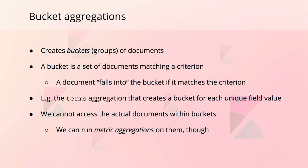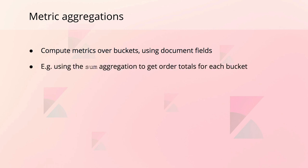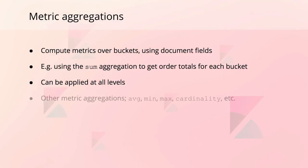That's where metric aggregations come into the picture. Metric aggregations compute metrics over a set of documents, being the documents within a bucket. The metrics are based on values extracted from the documents. Let's take the sum aggregation as an example. By applying this aggregation to the total field, we can see the sum of order totals for each bucket. Notice how the metric aggregation can be applied to buckets anywhere in the hierarchy, including at the top level. A couple of other metric aggregations worth mentioning are AVG, min, max, cardinality, etc.